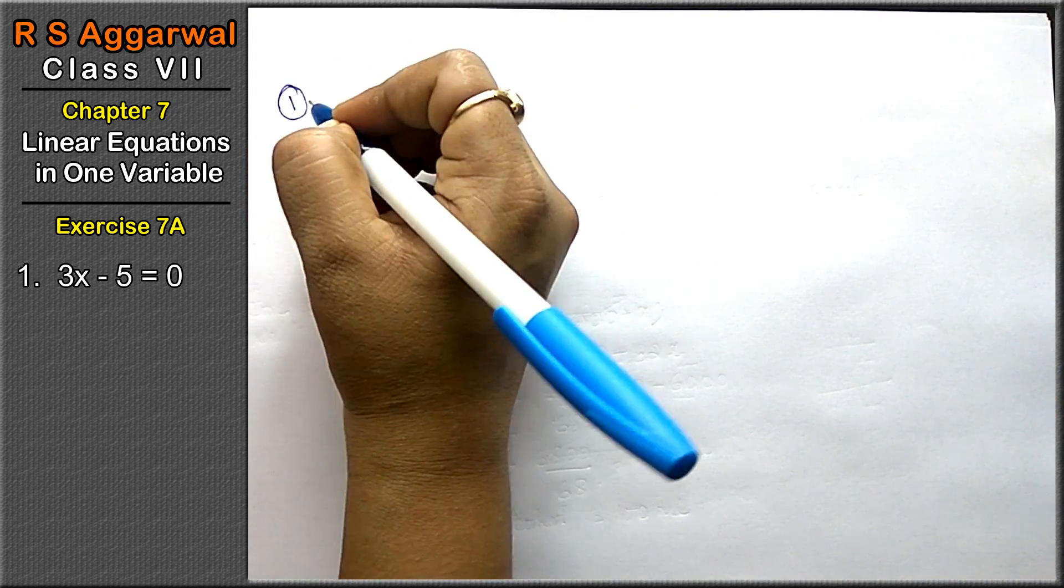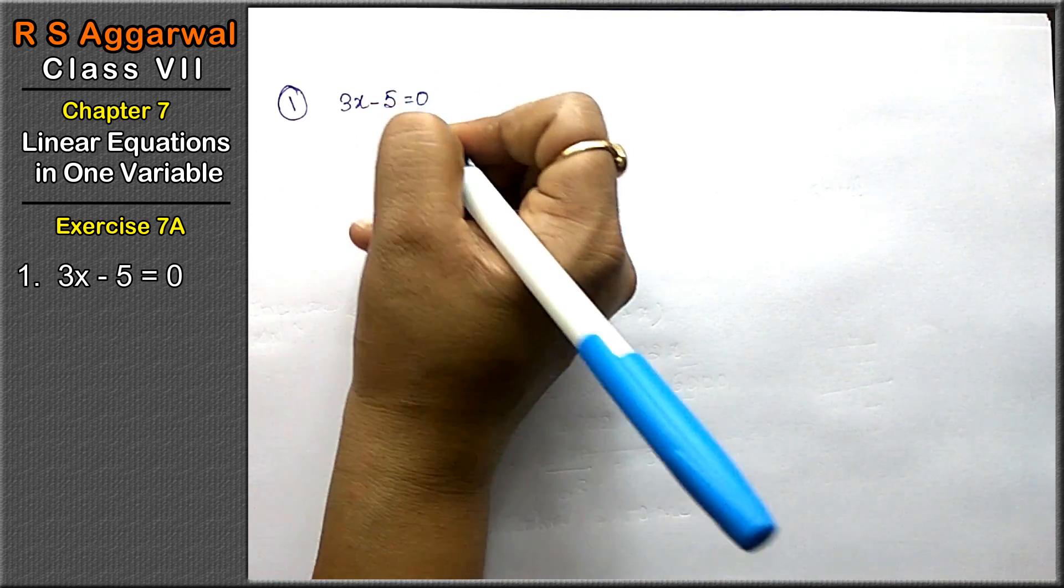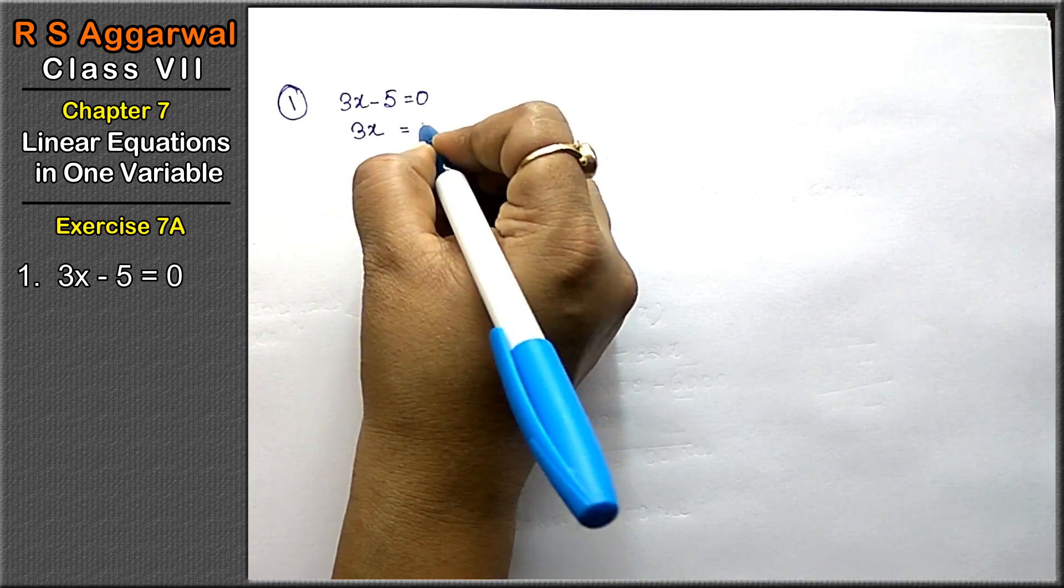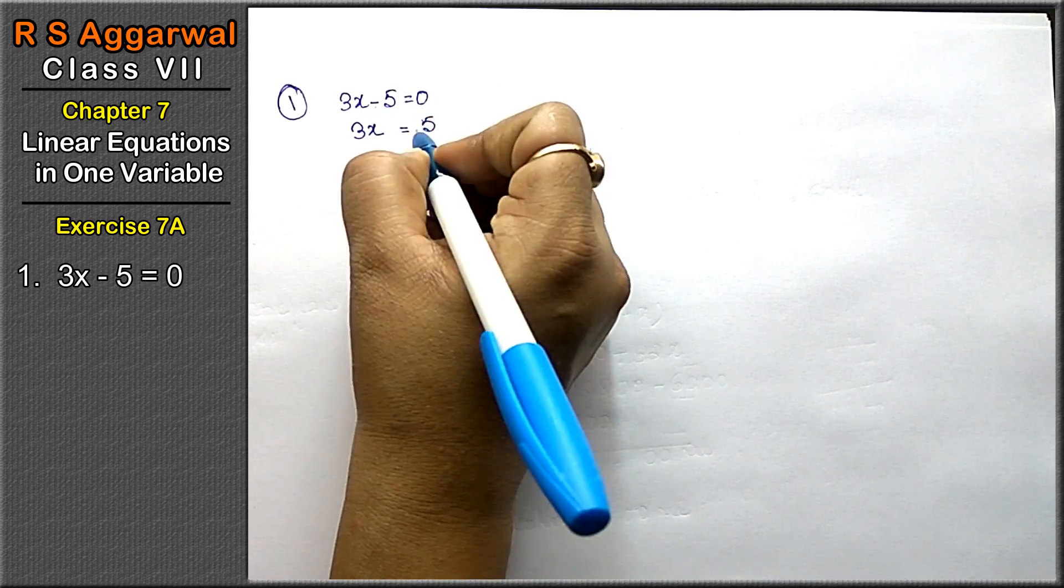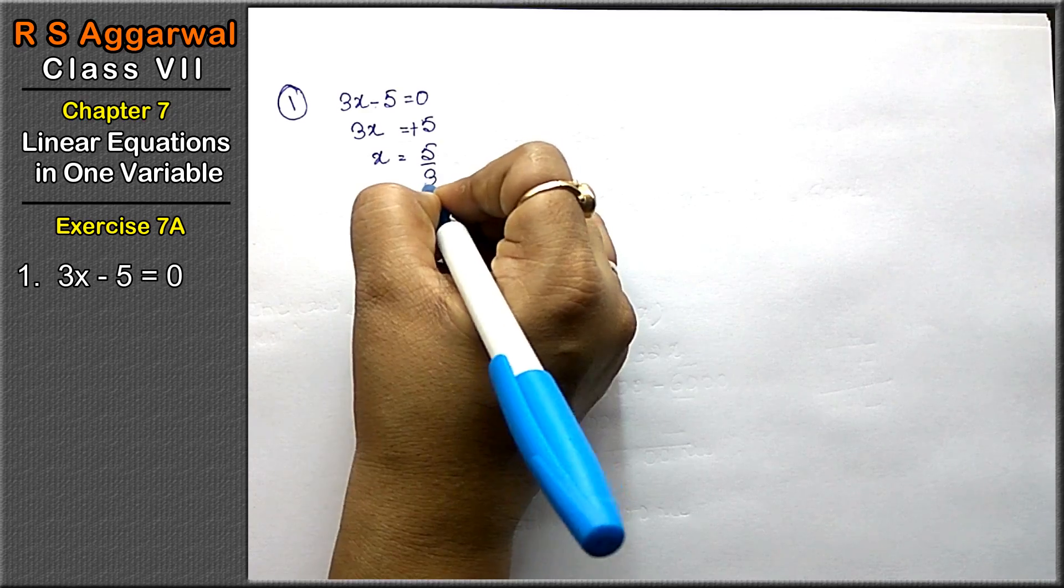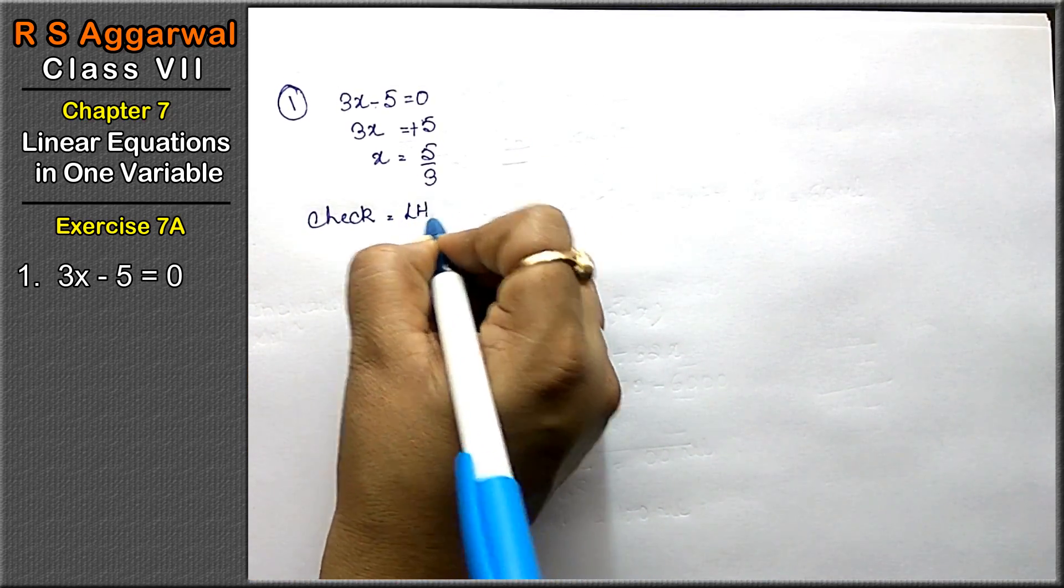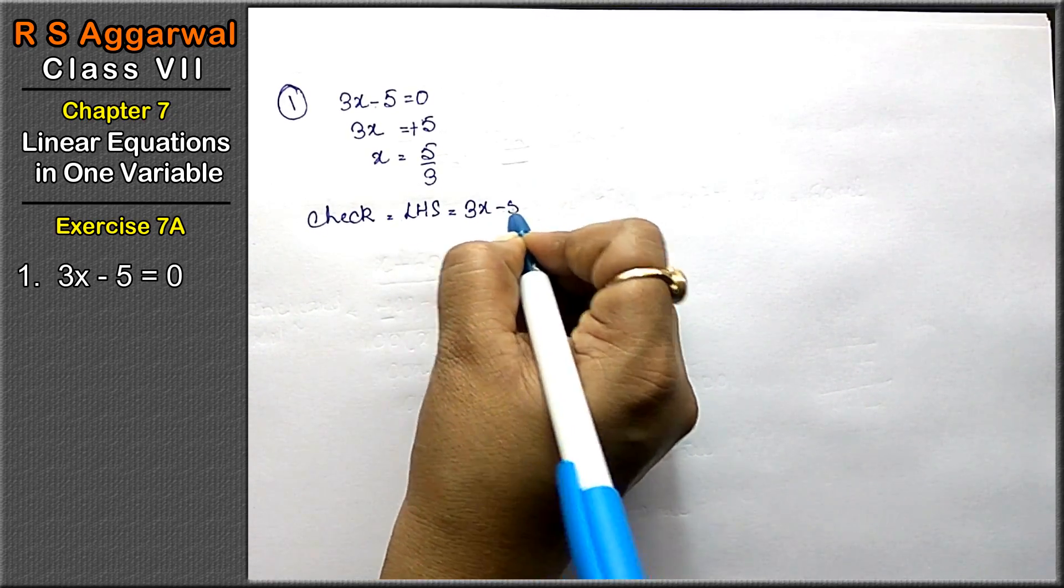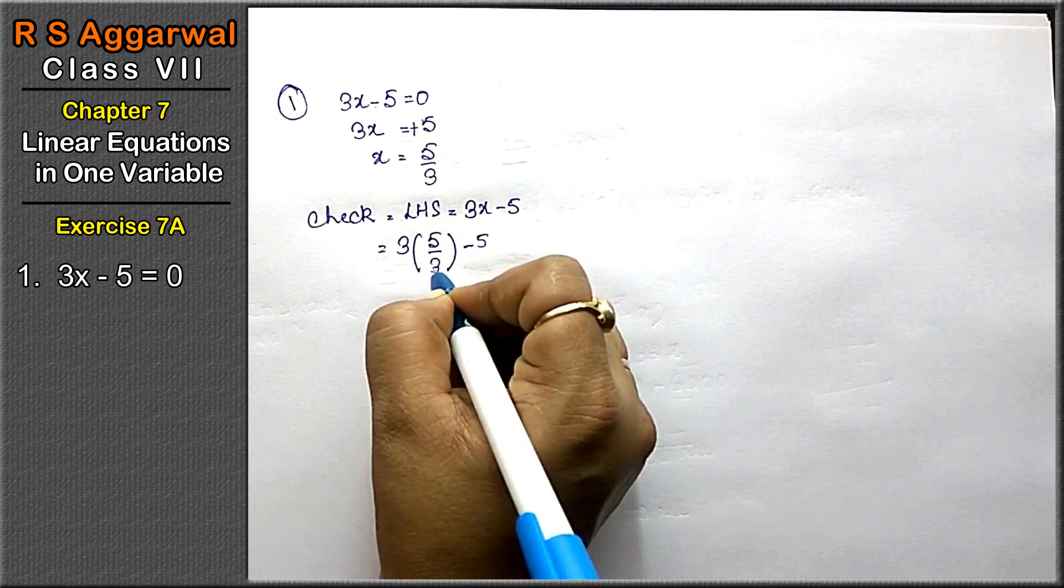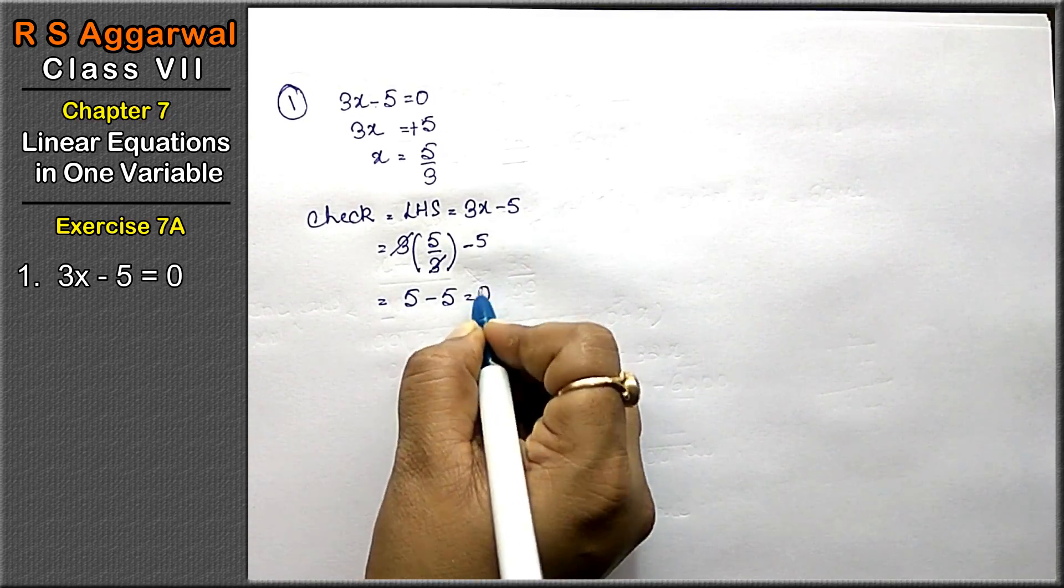First question is 3x minus 5 equals to 0. First, let's check. Left hand side, 3x minus 5, x equals 5/3. Check: LHS = 3 × 5/3 - 5 = 5 - 5 = 0. The answer is verified.